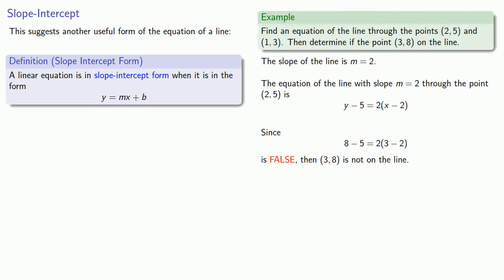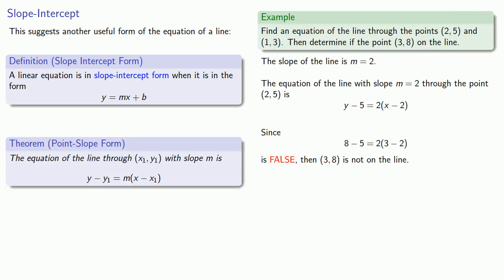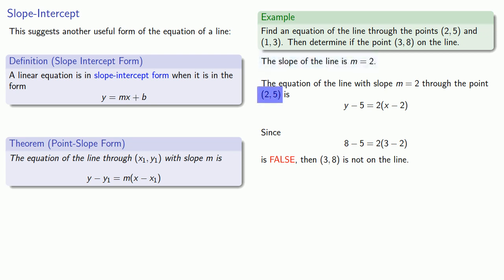It's worth comparing slope-intercept form to the point-slope form. The advantage of the point-slope form is that as soon as you have a point on the line and a slope, you can write down the equation of the line immediately. For example, as soon as we found that the slope of the line between (2, 5) and (1, 3) was 2, we could use the point (2, 5) to write down the equation of the line immediately.